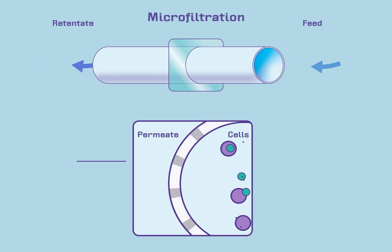Microfiltration membranes have pores that are 0.1 micron or larger and are used to separate cells, cellular debris, or other macromolecules from proteins and small molecules. When the material is applied to a microfiltration membrane, the smaller components pass through the membrane while the larger components are retained.